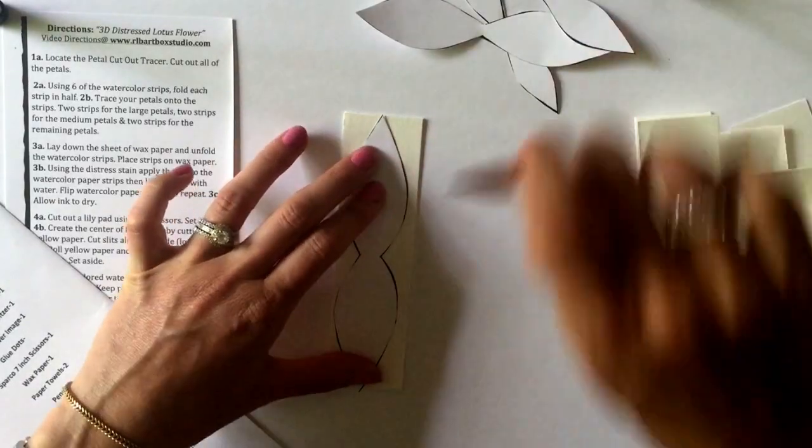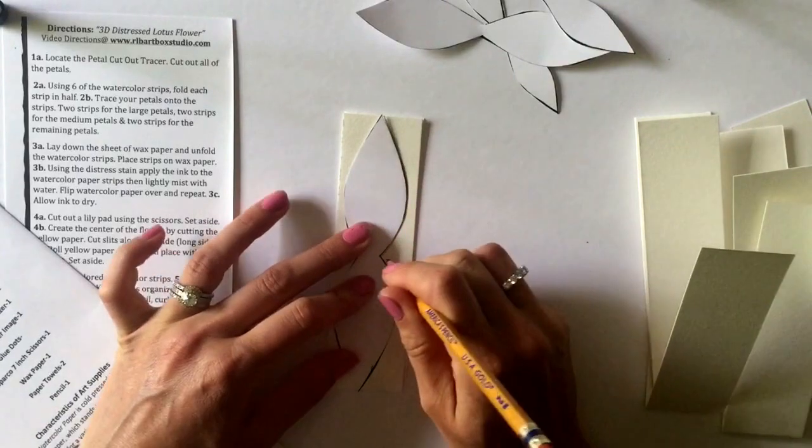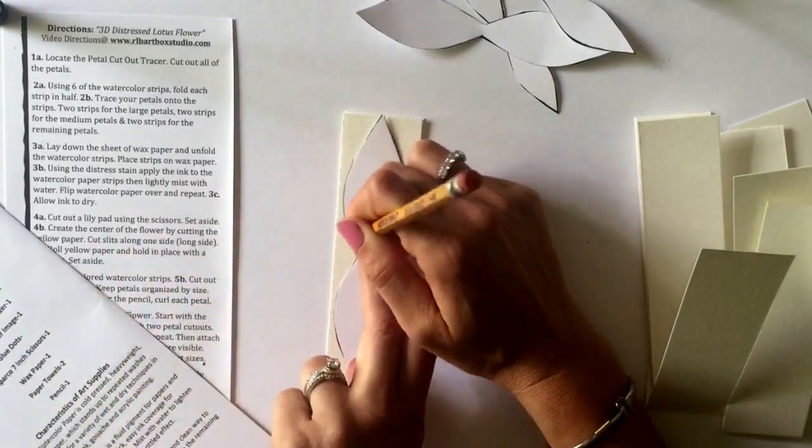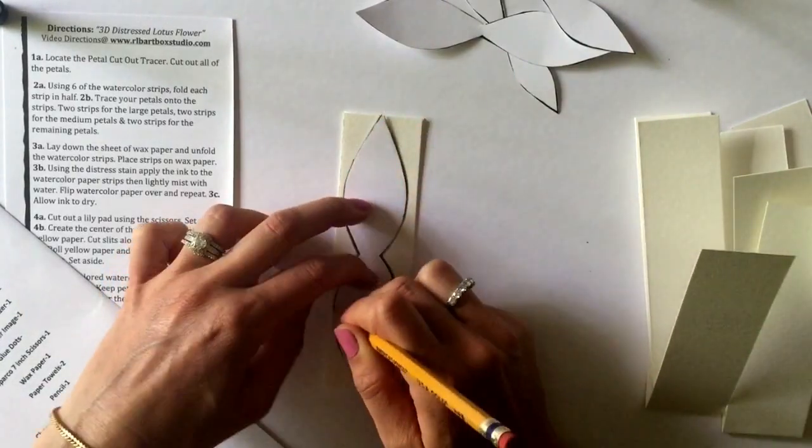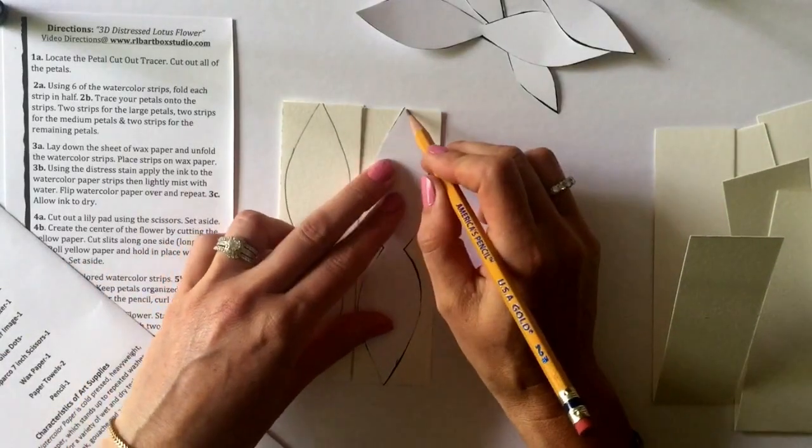Two strips are for the large petals, two strips are for the medium petals, and two strips are for the remaining petals. Once done tracing and cutting, you will have 16 petals total.